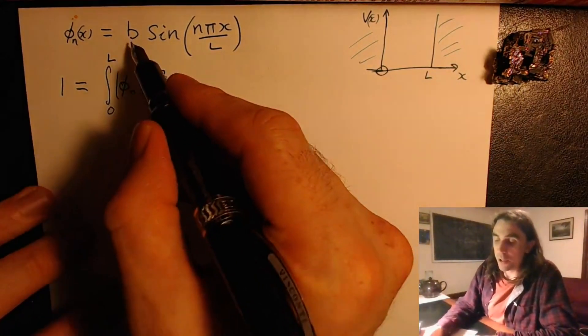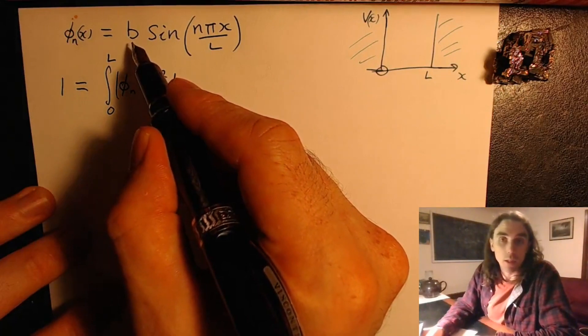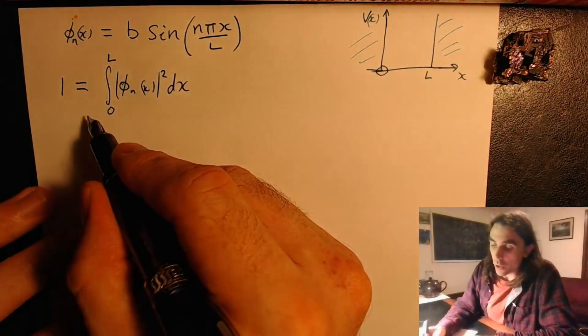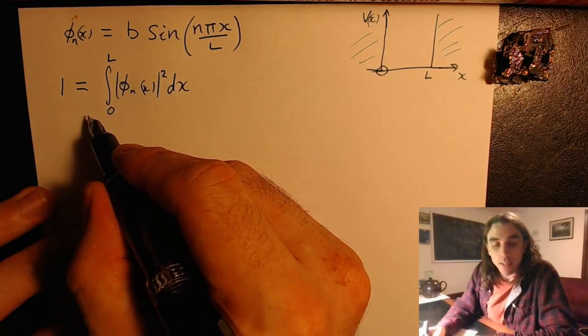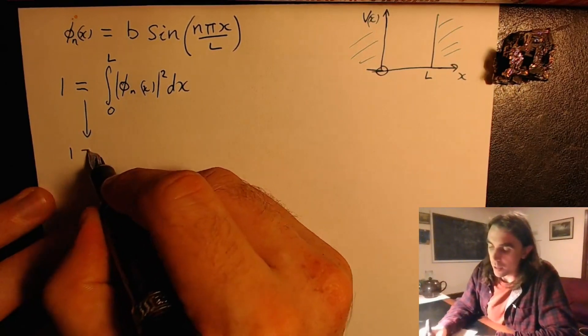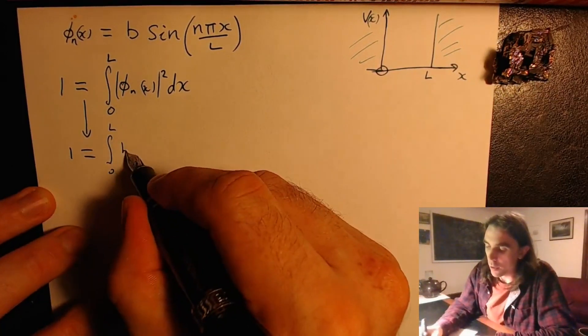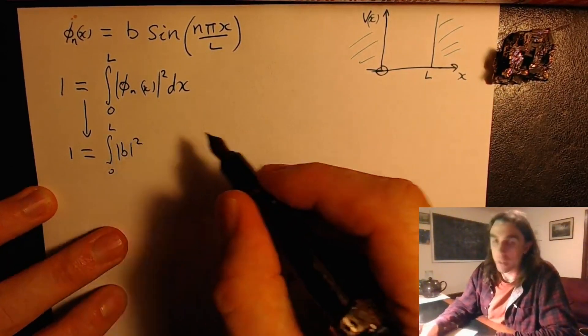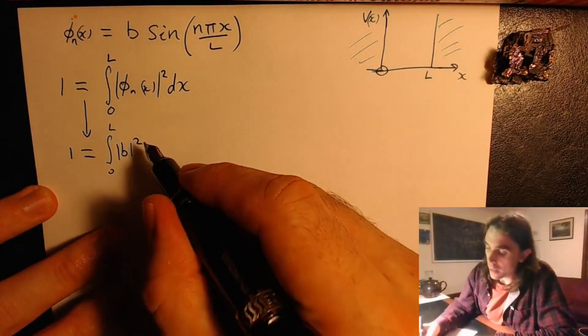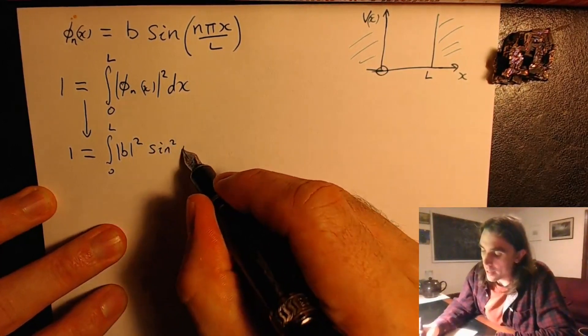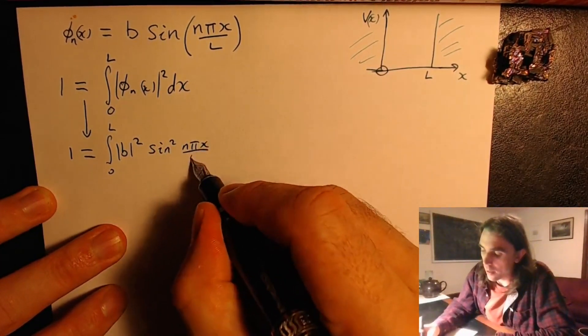And this is enough to solve for b up to a global phase. So to do it, let's substitute it in first. So we have the integral from 0 to l of modulus b squared, because remember it can be complex in general, sin squared n pi x over l.